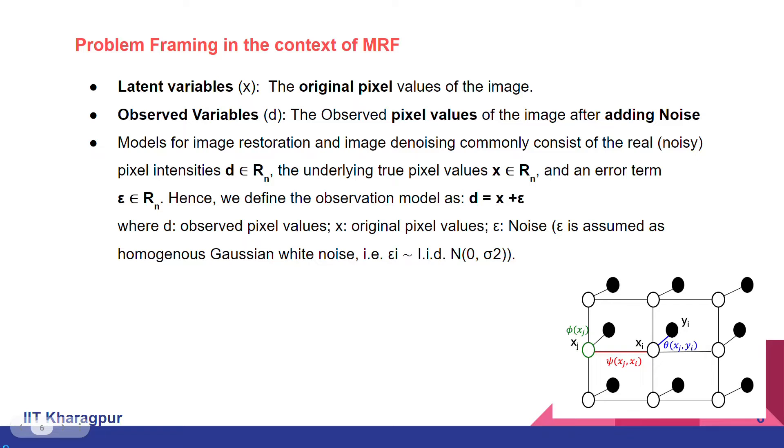Generally, the models for image restoration and denoising commonly consist of the real pixel intensities d and the underlying true pixel values x. The difference between these two can be considered as an error term, which is represented by epsilon here.